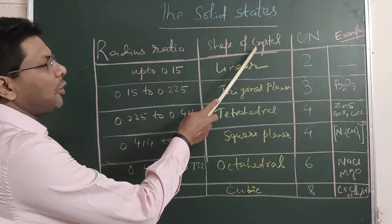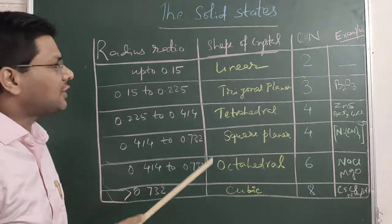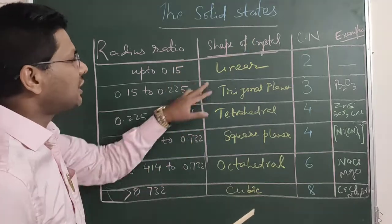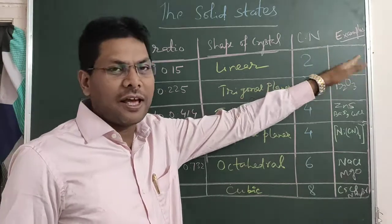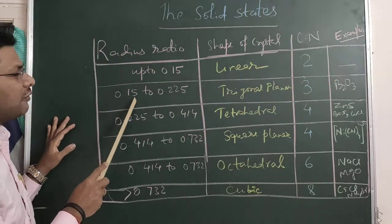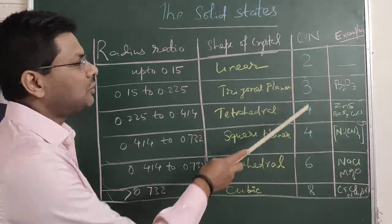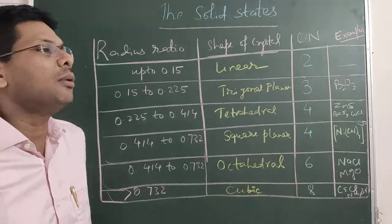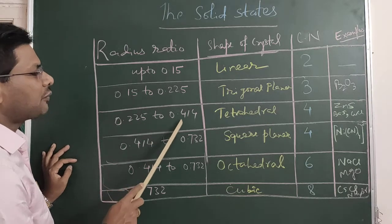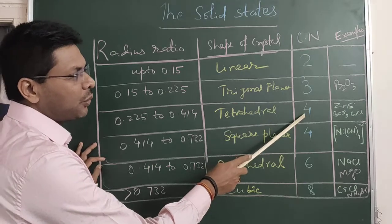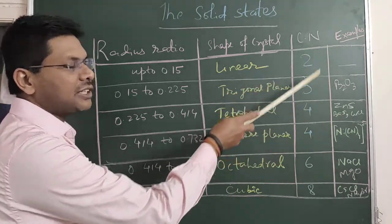Let's see the radius ratio, shape of crystal, coordination number, and examples. If the limiting radius ratio is up to 0.15, the shape of the crystal is linear with coordination number 2 — no solid has been found with this coordination number in anions. From 0.15 to 0.225, the shape is trigonal planar with coordination number 3; an example is B₂O₃ (boric oxide/boric anhydride), though this is rare. From 0.225 to 0.414, the shape is tetrahedral with coordination number 4; examples include zinc sulfide, barium sulfide, copper chloride, and copper iodide.